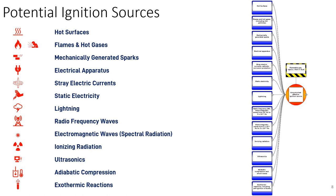We have a very useful list of potential ignition sources from BS EN 1127 part one. This document on explosive atmospheres, explosion prevention and protection gives 13 different possible ignition sources — ranging from the obvious hot surfaces, flames, and hot gases down to adiabatic compression and exothermic reactions. These may be less common, but they are still competent ignition sources with the potential to cause fires and explosions.